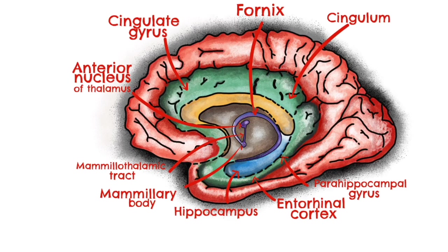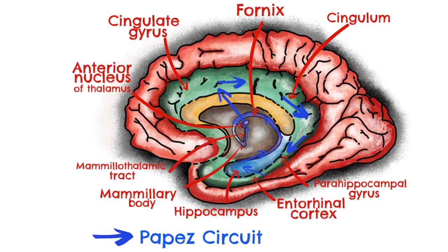Let's go over that one more time. We start at the hippocampus, then the fibres travel via the fornix to the mammillary body, then via the mammillothalamic tract to the anterior nucleus of the thalamus, then to the cingulate gyrus and cingulum, the entorhinal cortex, and finally back to the hippocampus. And that completes our Papez circuit.